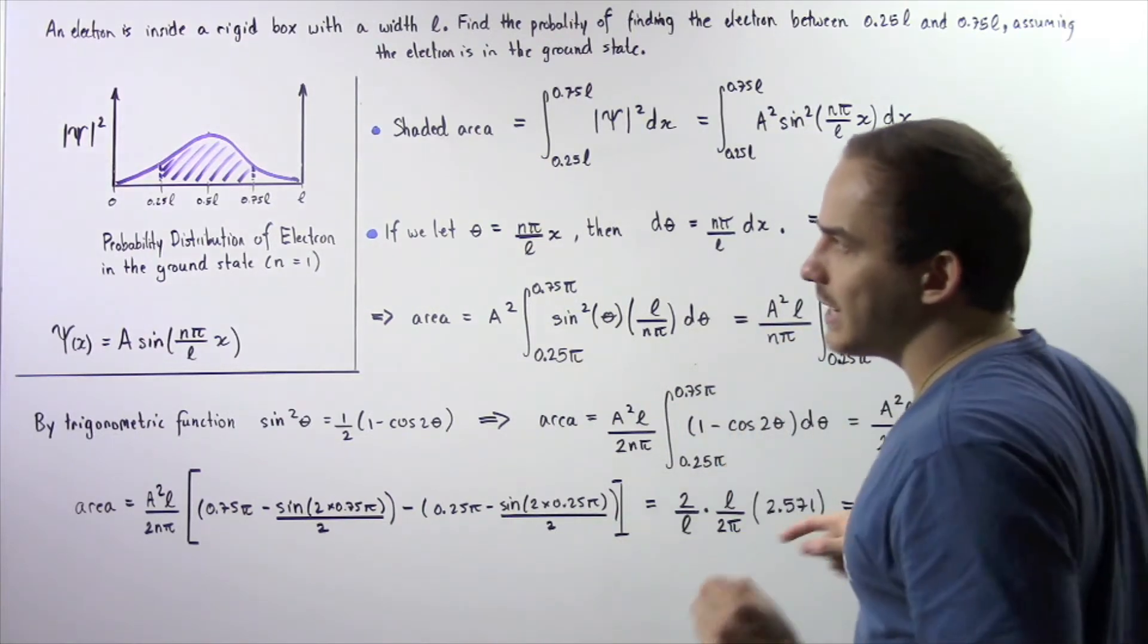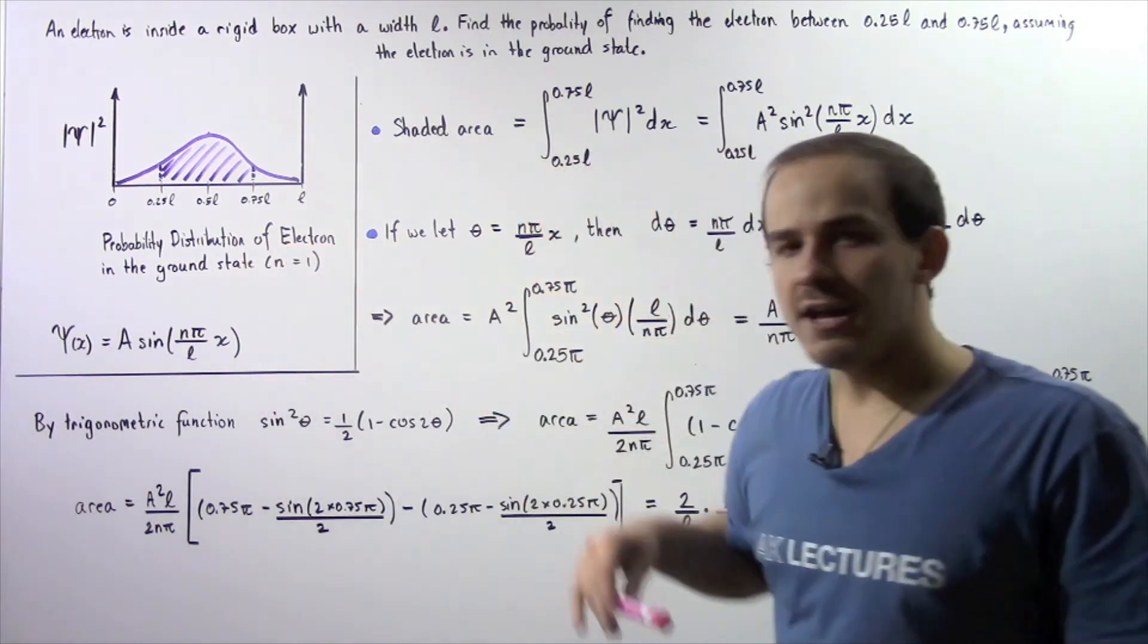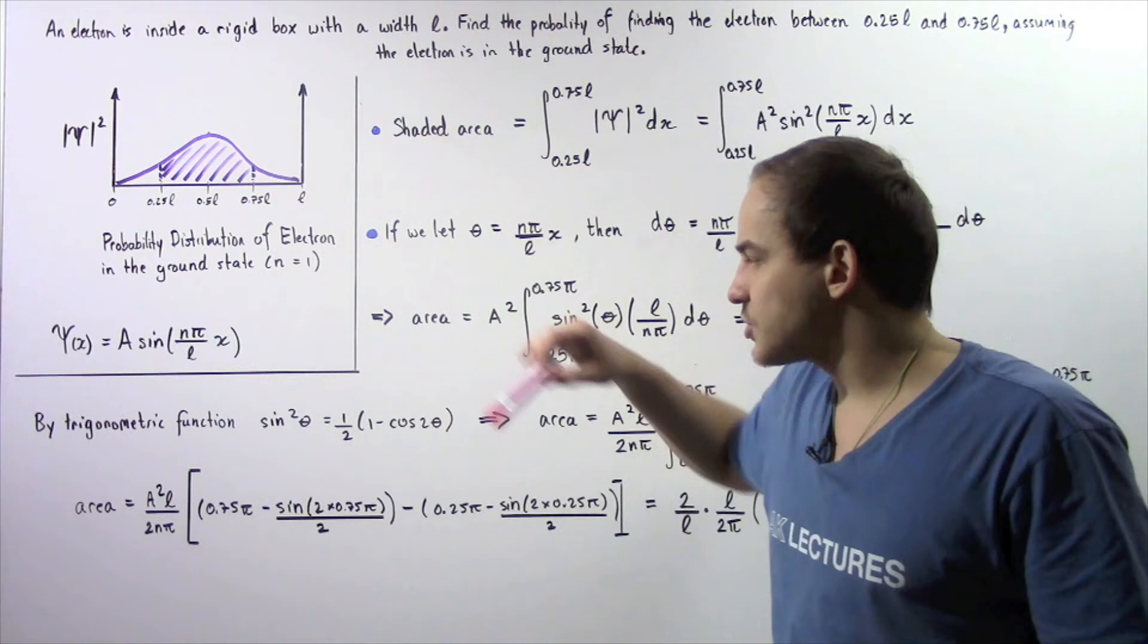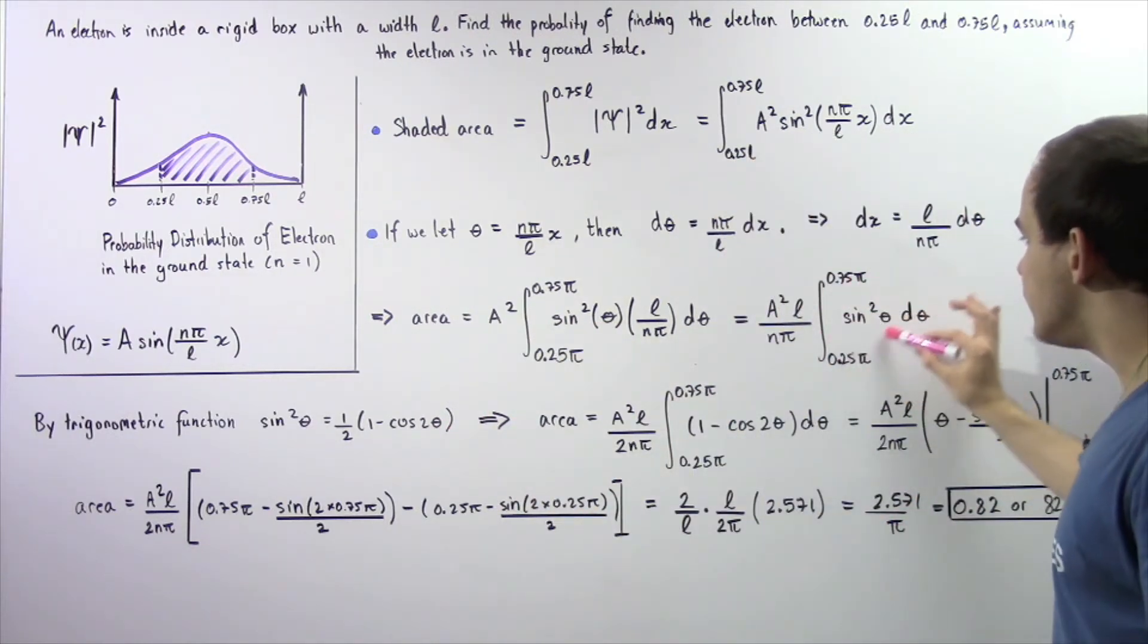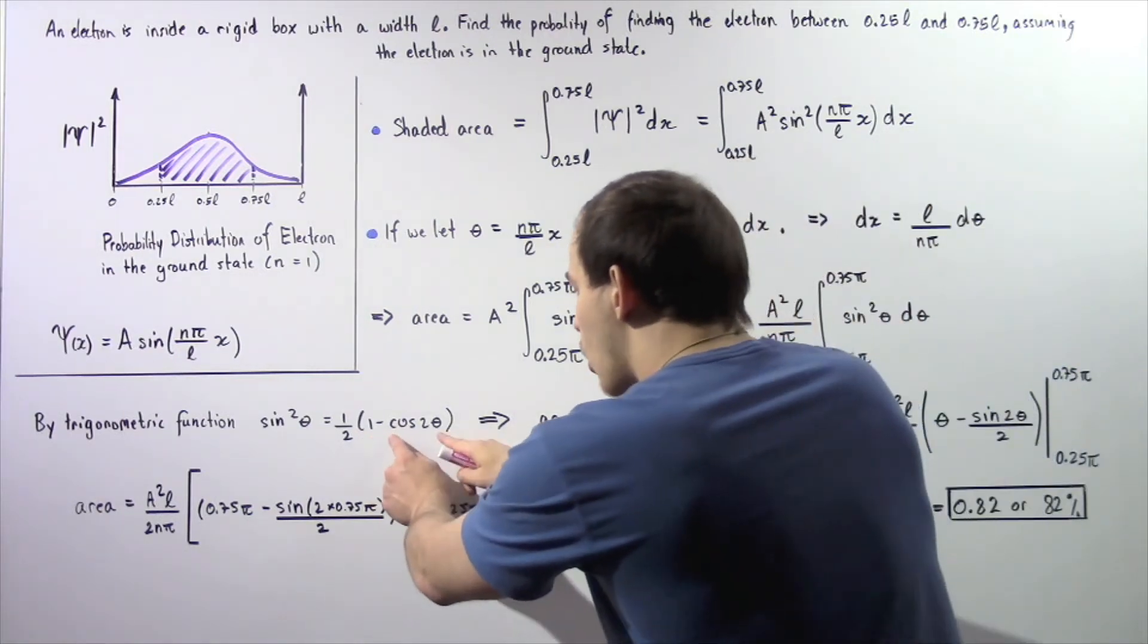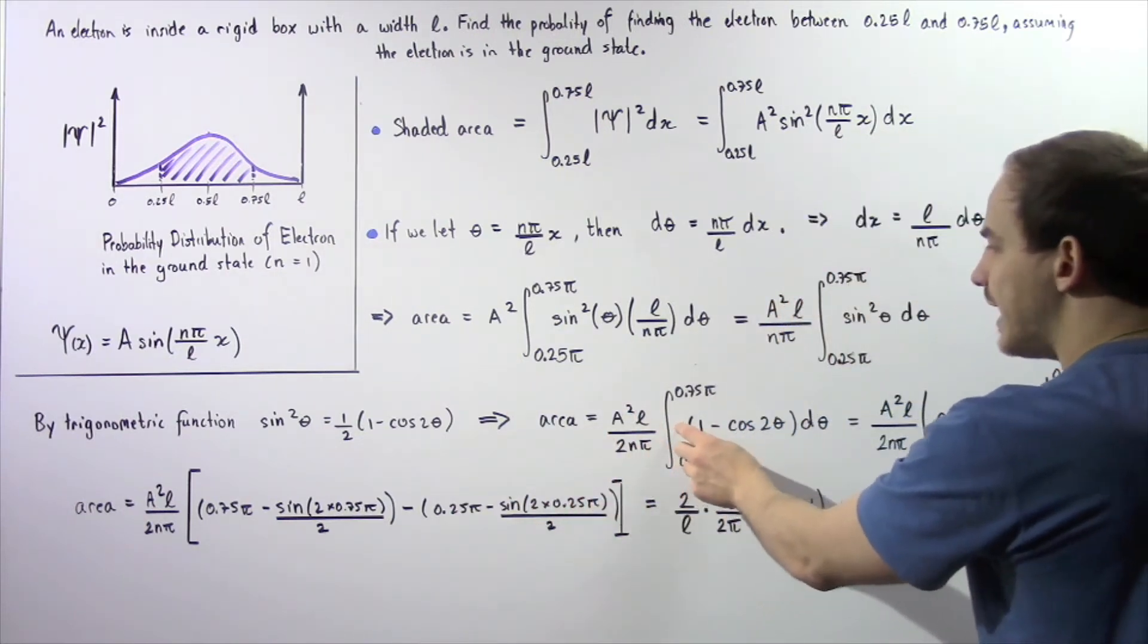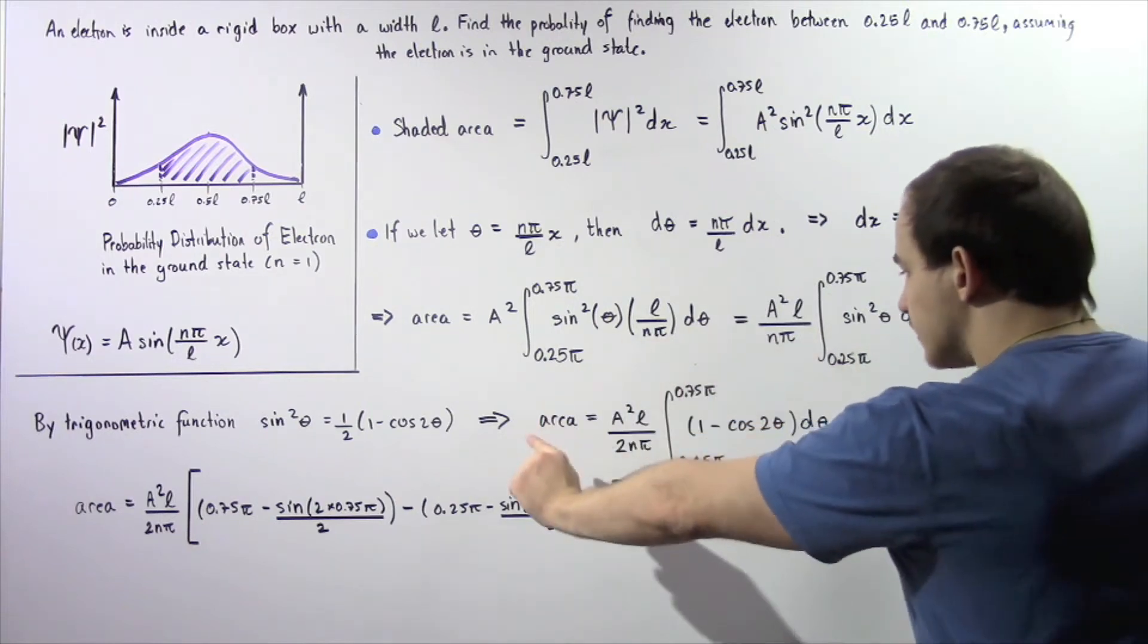Next we apply a trig function. We know that sine of θ squared equals one half of one minus cosine of 2θ. We take sine squared θ and replace it with one minus cosine 2θ. We take the one half and bring it outside of the integral because it's a constant.